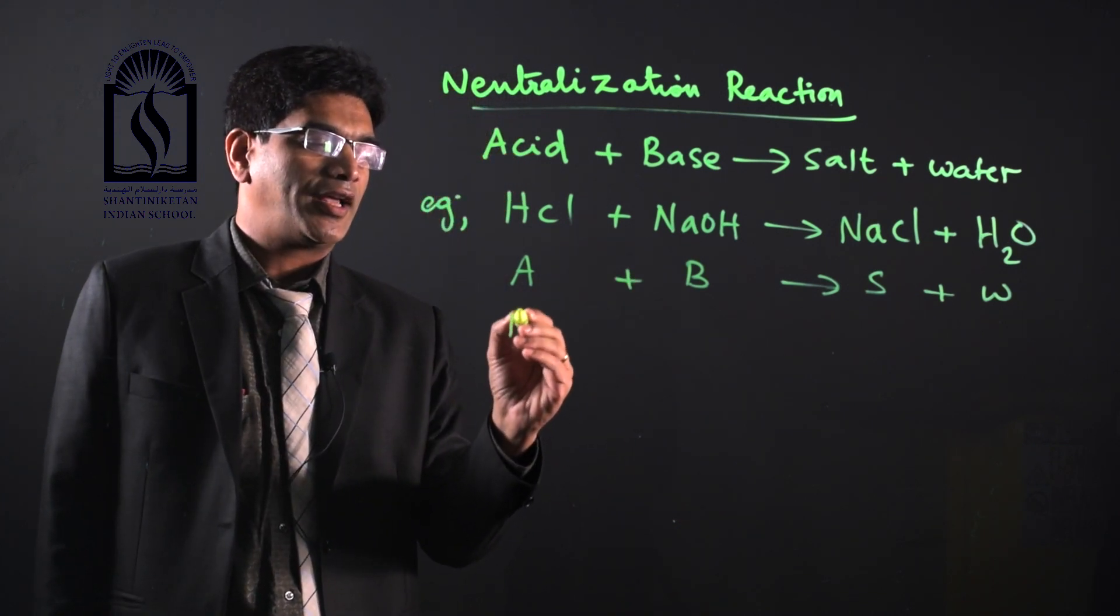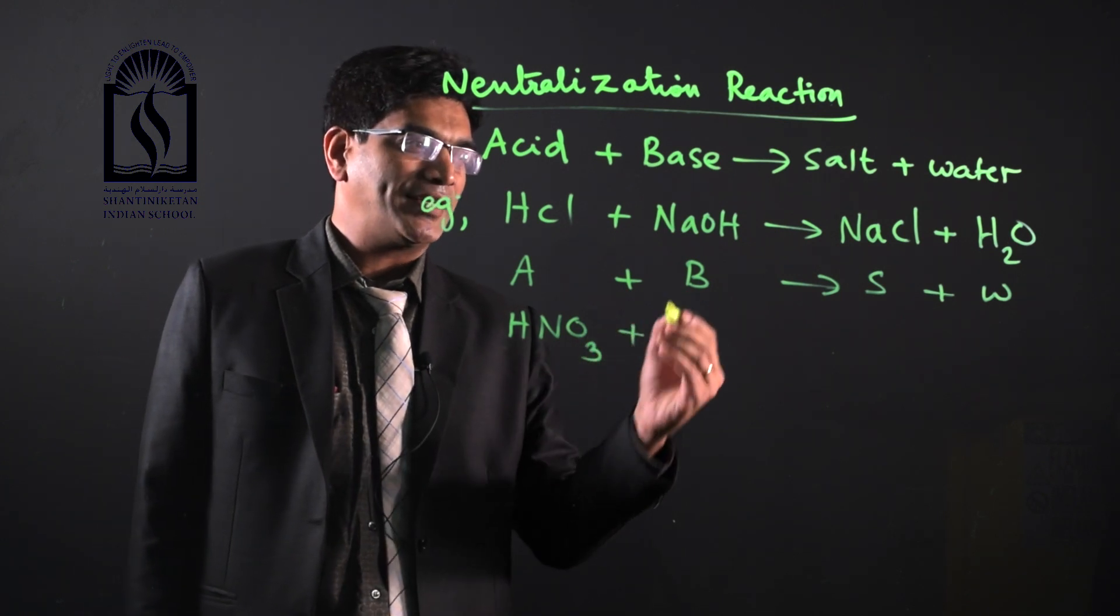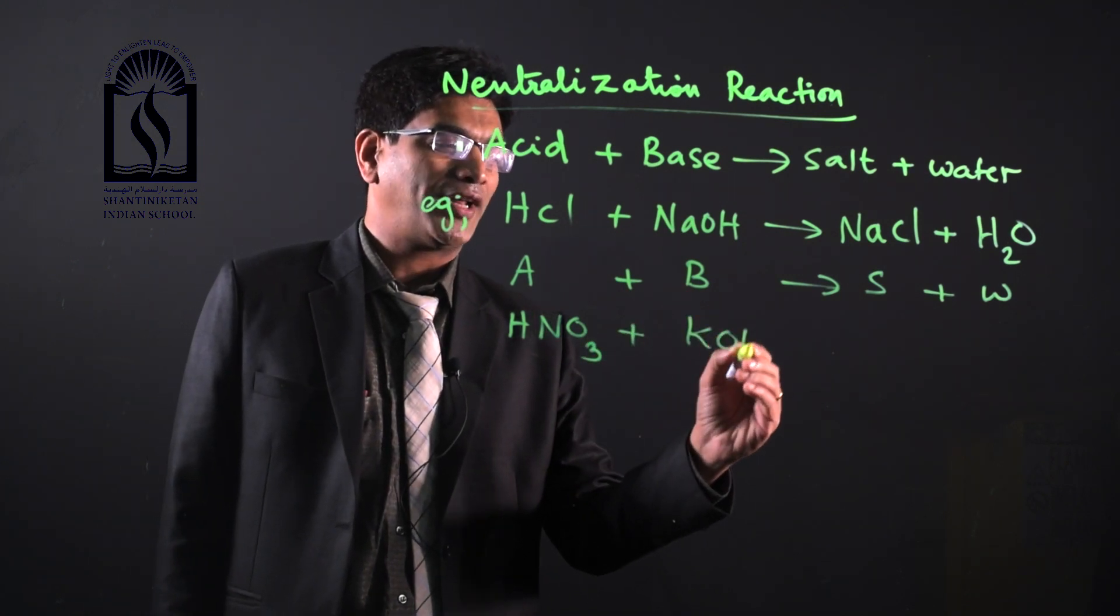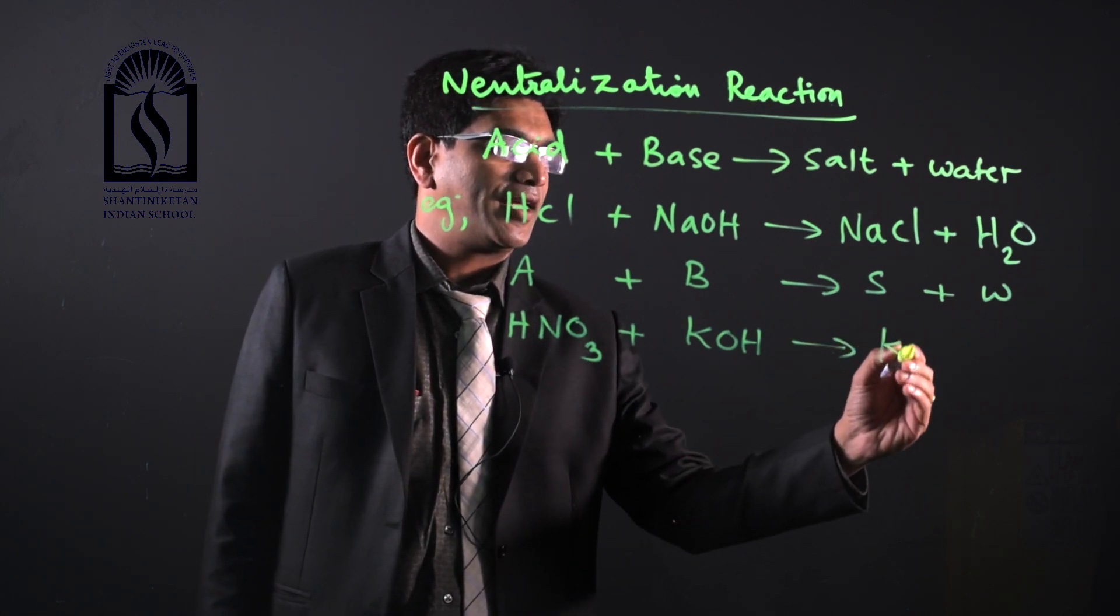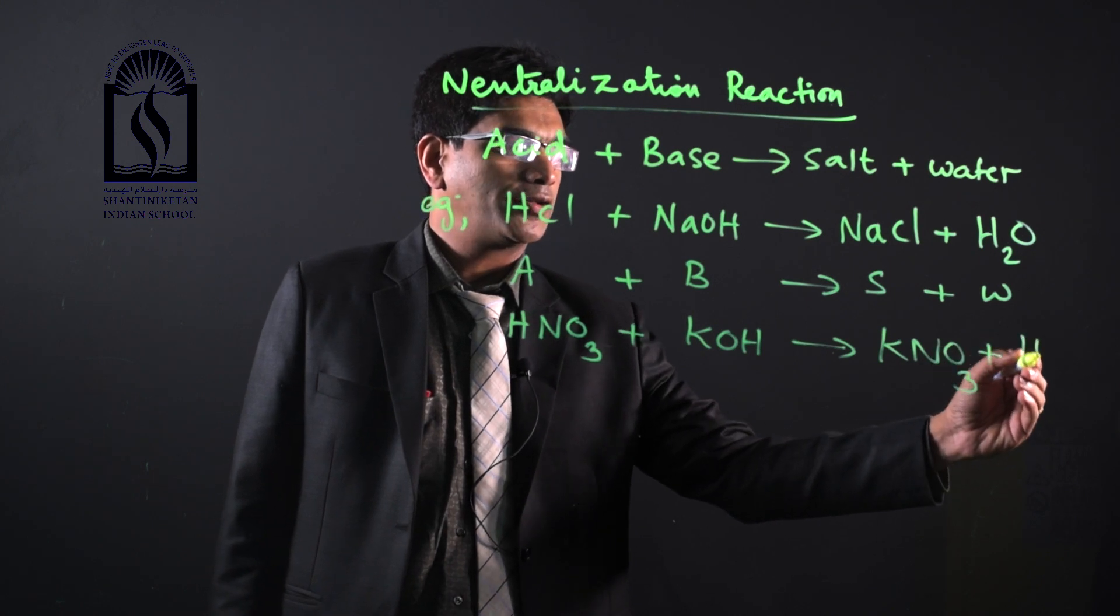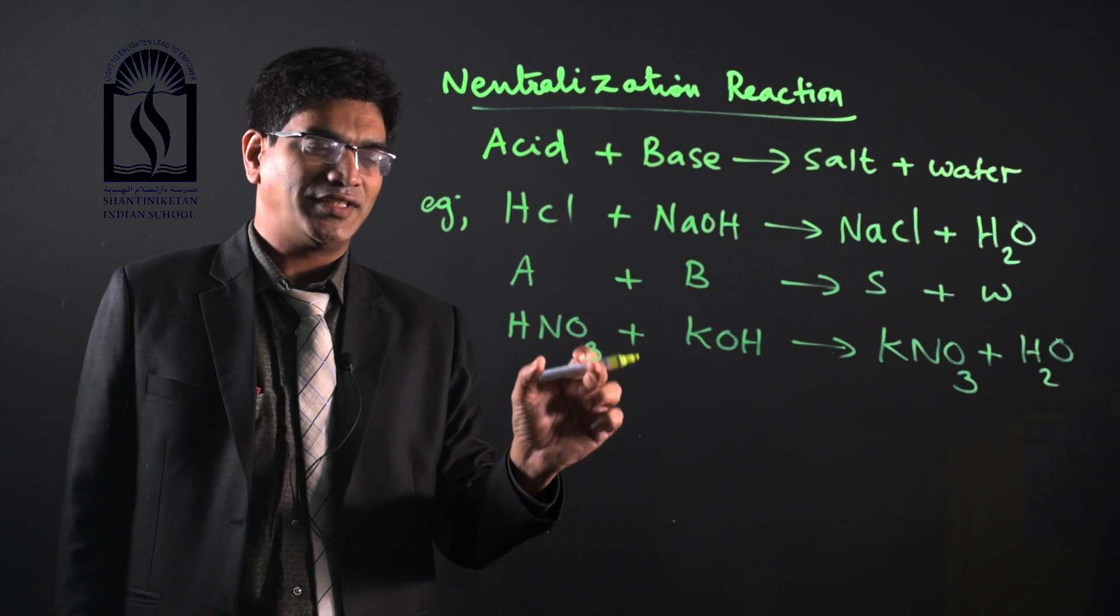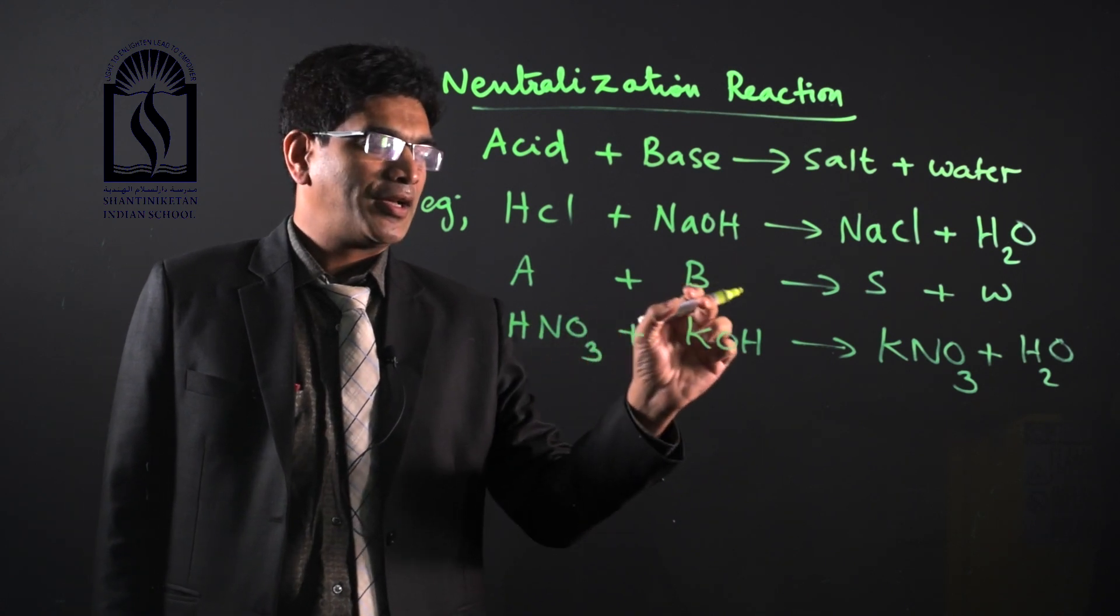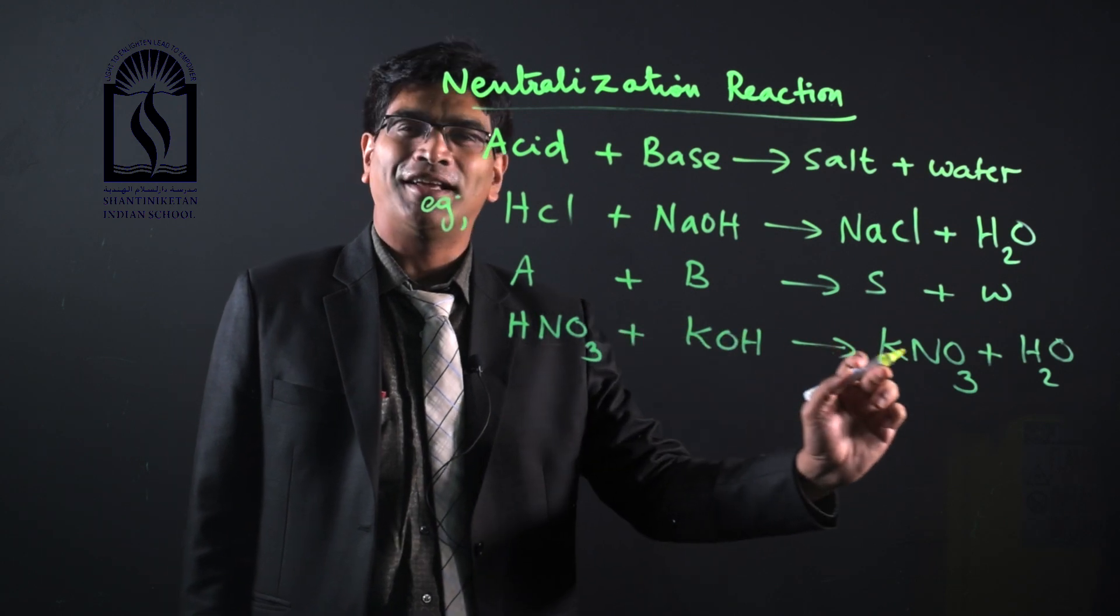HNO3 nitric acid reacts with base KOH potassium hydroxide and you get KNO3 potassium nitrate and water H2O. NO3- is the acid radical and K+ is the basic radical, so you get KNO3.